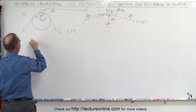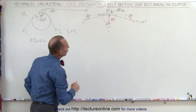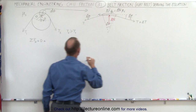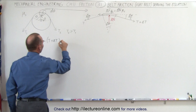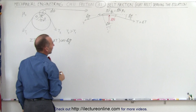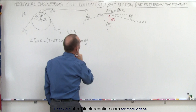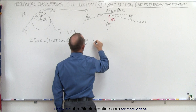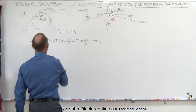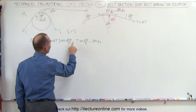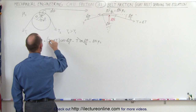We're going to sum all forces in the x direction, which equals zero. We have (T + delta T) times the cosine of delta theta over 2, minus T times the cosine of delta theta over 2, minus the friction force which is delta N times mu sub s, and all that adds up to zero. Notice that T times cosine of delta theta over 2 and minus T times cosine of delta theta over 2 cancel out.